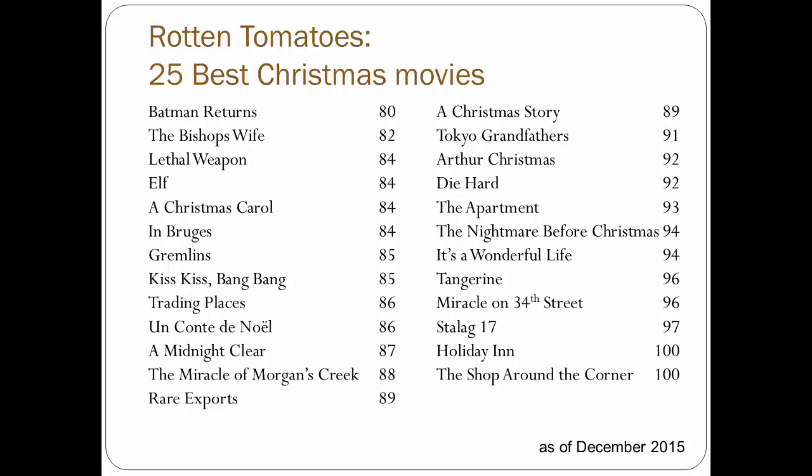Some of these movies may be unfamiliar, and some may not seem like Christmas movies. Notice the scores: the lowest score in this dataset is 80, for Batman Returns, which came out in 1992, while the highest score is 100, for the 1940 movie The Shop Around the Corner and the 1942 movie Holiday Inn. This relates to the first three measures of dispersion. Minimum — the lowest value in a dataset — which in this case is 80.